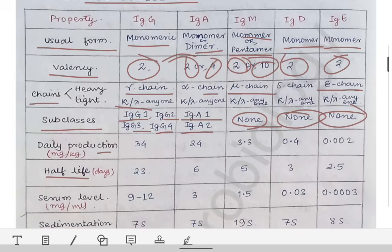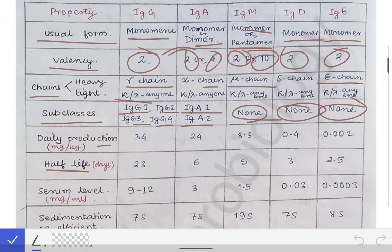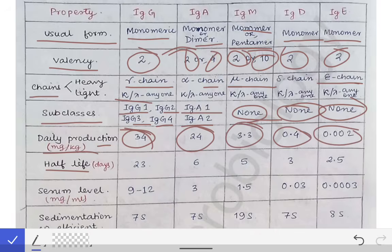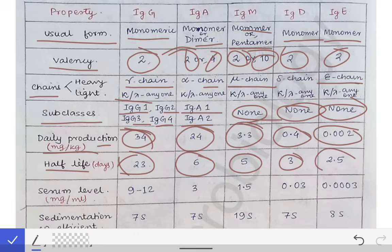Come to the daily production rate in milligram per kg body weight. IgG production is at 34 mg/kg, IgA is 24 mg/kg, IgM daily production is 3.3, IgD is 0.4, and IgE is 0.002. Then half-life: 23 days for IgG, 6 days for IgA, 5 days for IgM, 3 days for IgD, and 2.5 days for IgE.